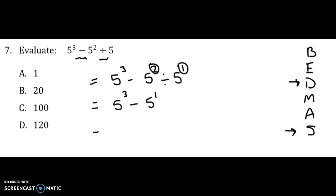So now I've got 5 cubed, which is 5 times 5 times 5, subtract 5 to the 1, which is 5. So it would be 125 subtract 5 for an answer of 120.